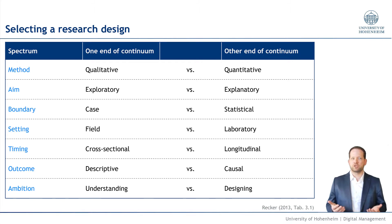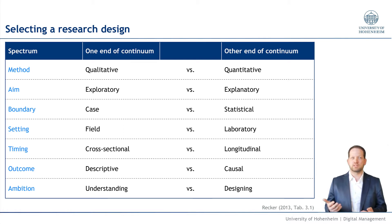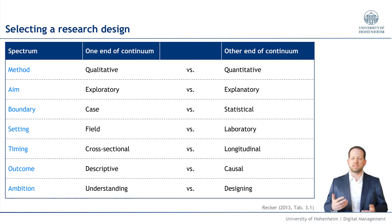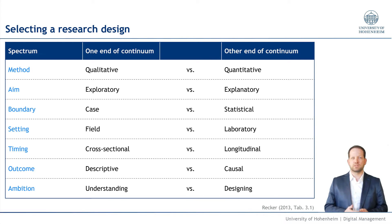The next dimension is the outcome — either the outcome is something descriptive or it is a causal model, a causal theory. And there are differences in ambition: you can either aim to understand the world or design something which changes the world, hopefully makes it better. Understanding is more the behavioral research part; designing is more the design science research part.